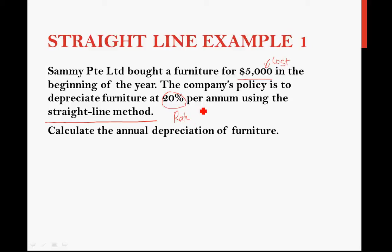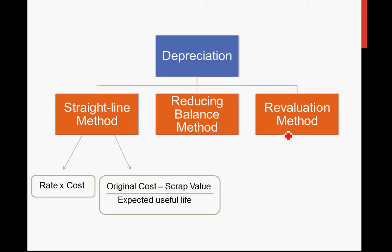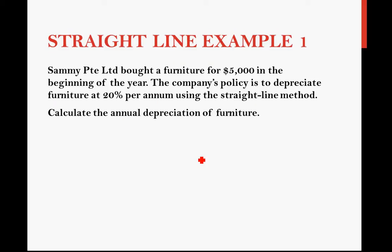You are supposed to calculate the annual depreciation. Looking at the two straight-line formulas: are you given scrap value? No. Expected useful life? No. But you have original cost and rate, so you use formula one: rate times cost. The formula is: annual depreciation = rate × cost. Rate equals 20%, cost equals $5,000.